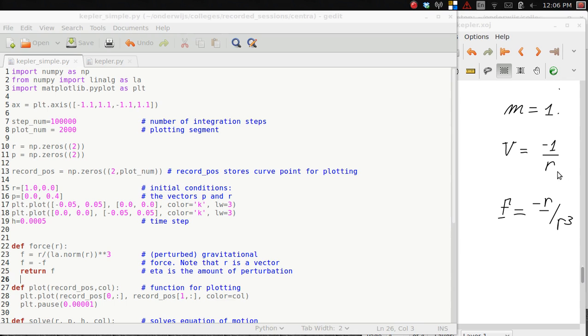Now I take the Kepler force, the gravitational force, as minus 1 over r, so the pre-factor is simply minus 1, and if I calculate the force from this potential, I get minus the vector r divided by r to the third, and you see that that is encoded here in this function which calculates the force. So we have minus r divided by r to the third.